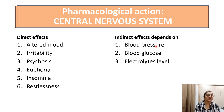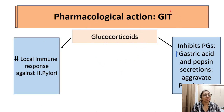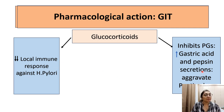Effect of glucocorticoids on the gastrointestinal tract: locally, the immune response against H. pylori infection is reduced. They inhibit prostaglandins, increase gastric and pepsin secretion, and aggravate peptic ulcer. So there are increased chances of H. pylori infection as well as aggravation of peptic ulcer.